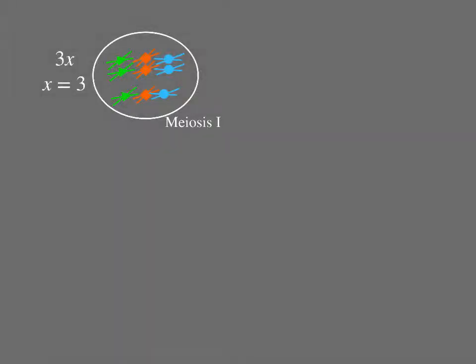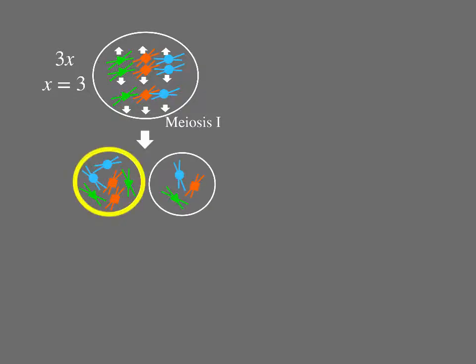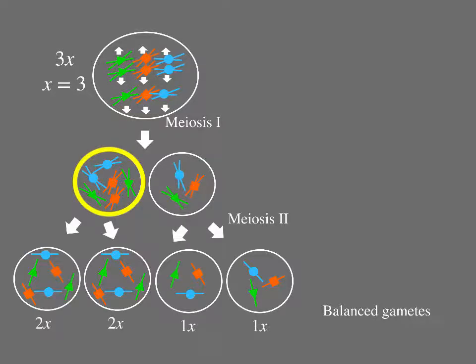In a triploid cell, one of each homolog will segregate into different cells, and the third homolog of the group will follow one of the other two, randomly. So how likely is it that this triploid cell, where x equals 3, will generate balanced gametes—gametes that have only complete sets of chromosomes? For that to occur, all of the third homologs must segregate into the same cell. If they do, two 2x gametes and two 1x gametes are generated. How likely is this event?